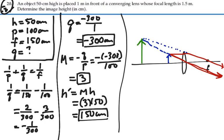I'm sorry, image distance is 300 centimeters, okay? So this was 100 centimeters, and this is 300 centimeters.